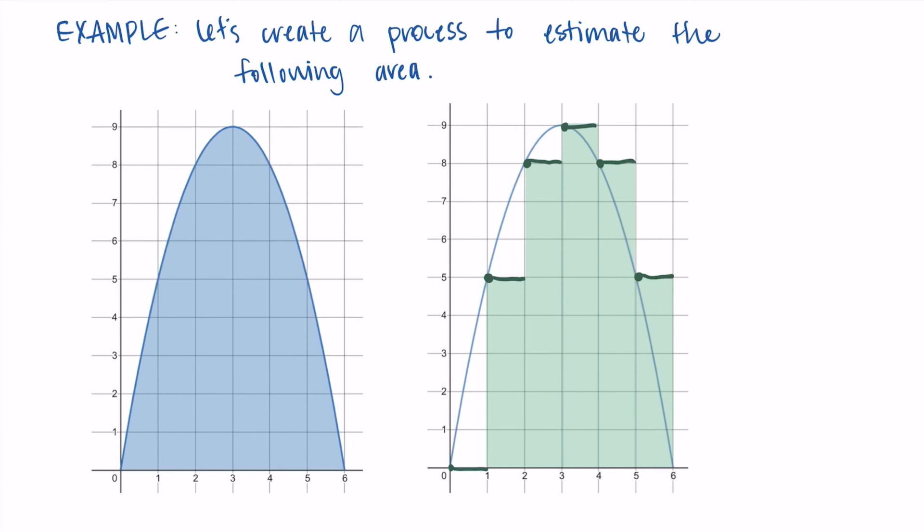Then what I want to do is find the areas of each of these individual rectangles and then add them up. So our rectangles have areas of 0, 5, 8, 9, 8, and 5. And I'm doing this because they have a width of 1 and a height of whatever value we've selected. So for example, the middlemost rectangle has a width of 1 and it has a height of 9. So 1 times 9 is 9, meaning that rectangle has area of 9. Then the total area is just the sum of these values, and so I'm getting 35 as my area.